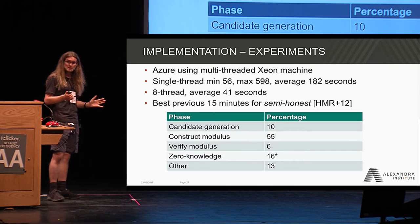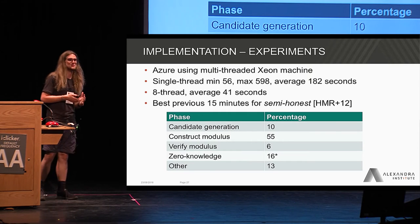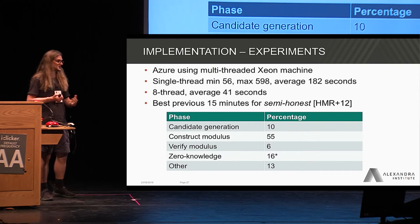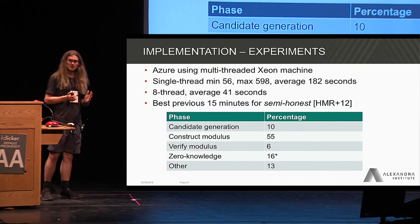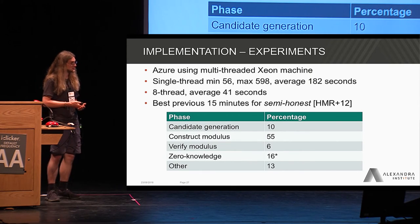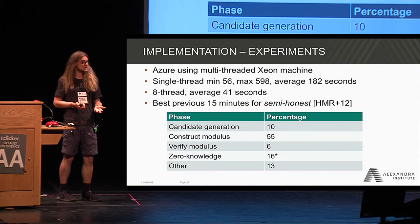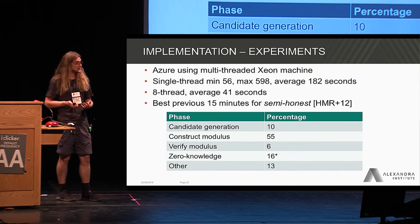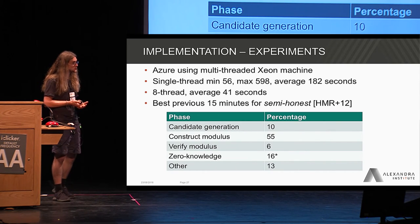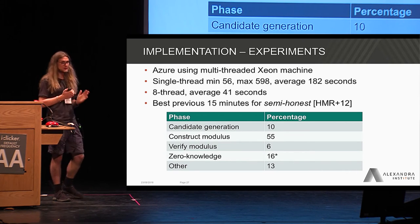There is a very big variance here. The reason is probably that this is an extremely random process — we don't know how quickly we'll end up getting good values. This is based on an average of 30 executions and is consistent with the big variance reported in previous implementations. The main result to highlight is that for an eight-threaded implementation, we managed to get an average of about 41 seconds. The comparison is work by Hassai et al. from 2012, where they get the best times of 15 minutes for a semi-honest protocol — so we get a big difference.